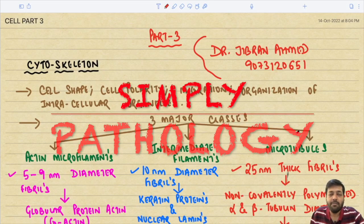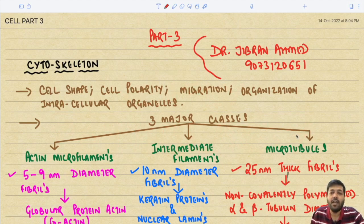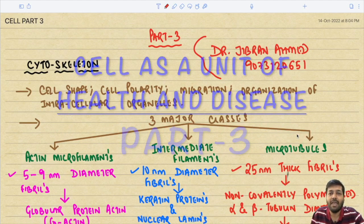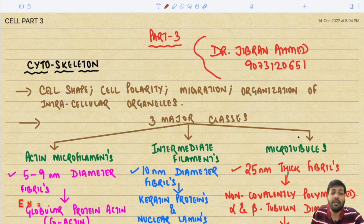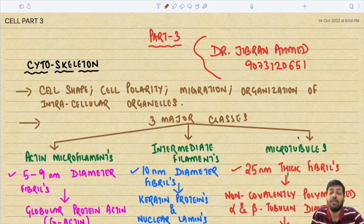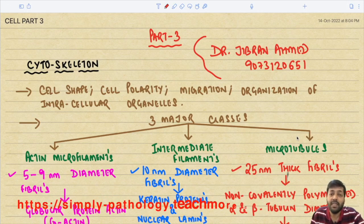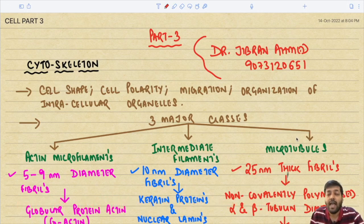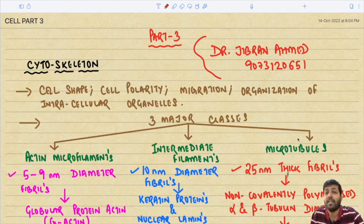Dr. Gibran Amad presents Simply Pathology. Today we continue with 'Cell as a Unit of Health and Disease, Part 3.' In this lecture, we will cover the cytoskeleton, cell-to-cell interactions, the biosynthetic machinery including the endoplasmic reticulum and Golgi apparatus, and finally the degradation pathways involving lysosomes and proteasomes.